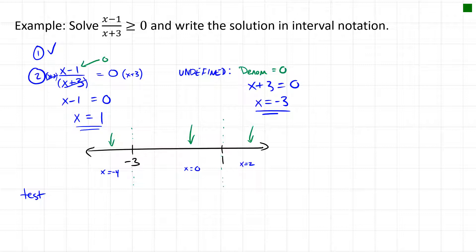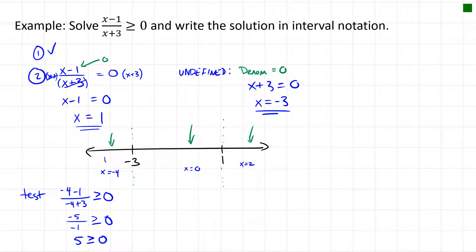Testing x = −4: (−4 − 1)/(−4 + 3) = −5/−1 = 5, and 5 ≥ 0 is true. So the region to the left of −3 satisfies this rational inequality.